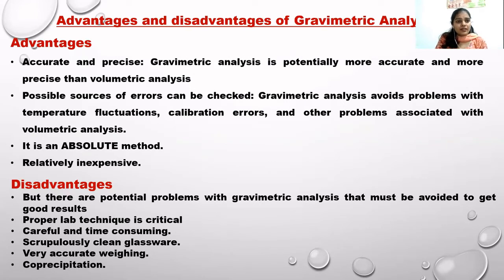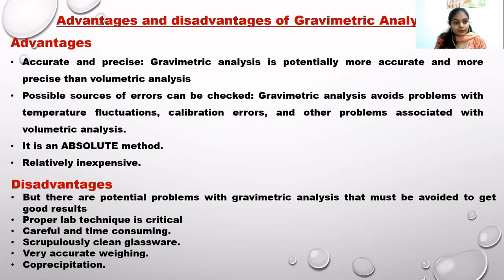The advantages of gravimetric analysis are that it is accurate and precise. Possible sources of error exist but these can be checked and reduced to the maximum extent with careful technique. It is an absolute method and relatively inexpensive. Disadvantages include the requirement of proper lab technique, careful and time-consuming procedure, and the need for clean glassware.